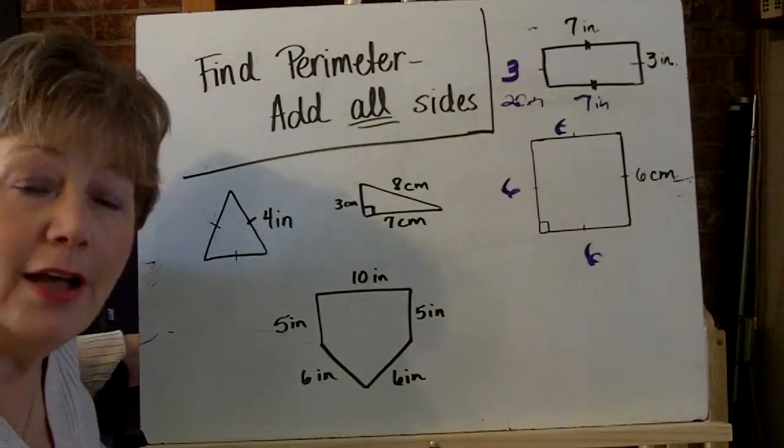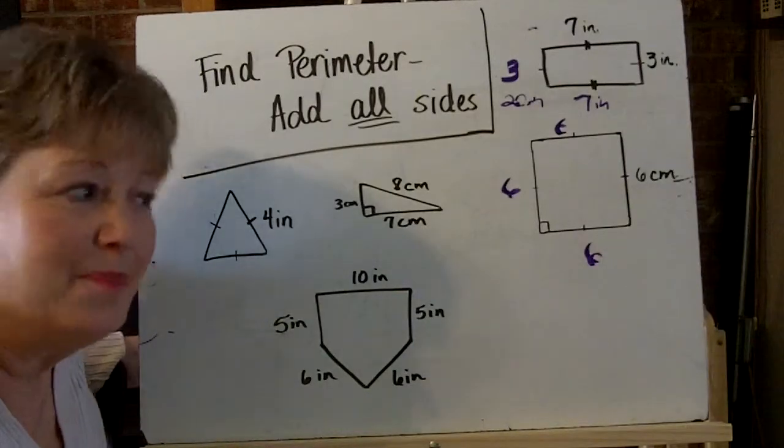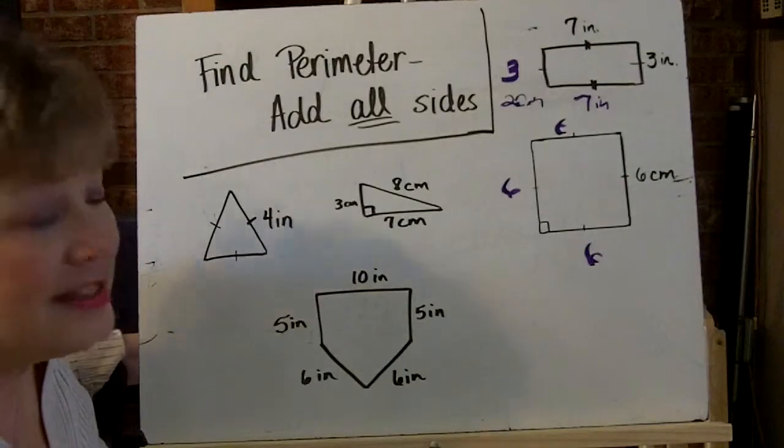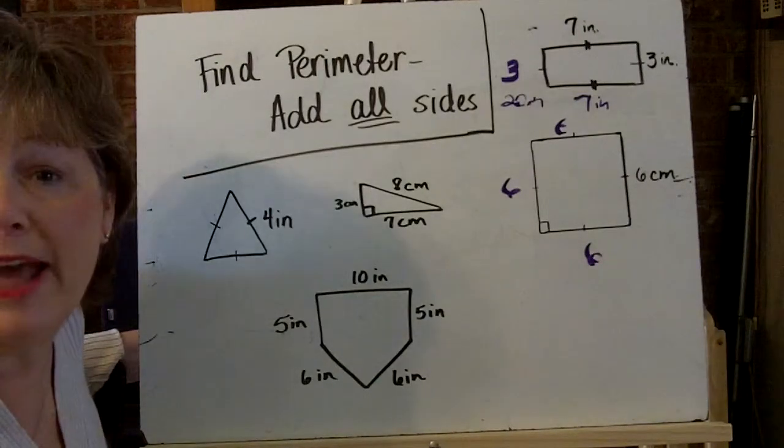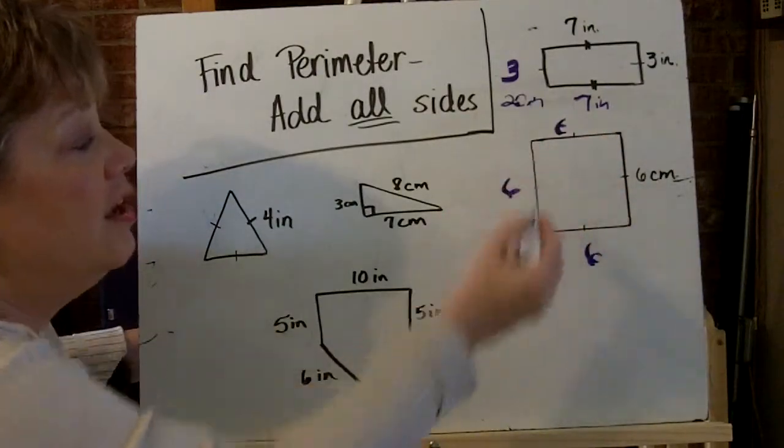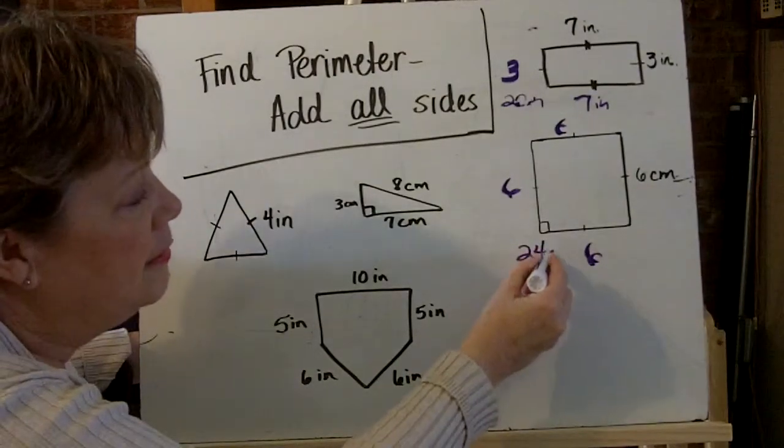And I can add them all up six plus six plus six plus six. Or I can see that that's four sixes and say four times six. Either way is going to give me the perimeter, the outside edge of that square. And it will be 24 centimeters.